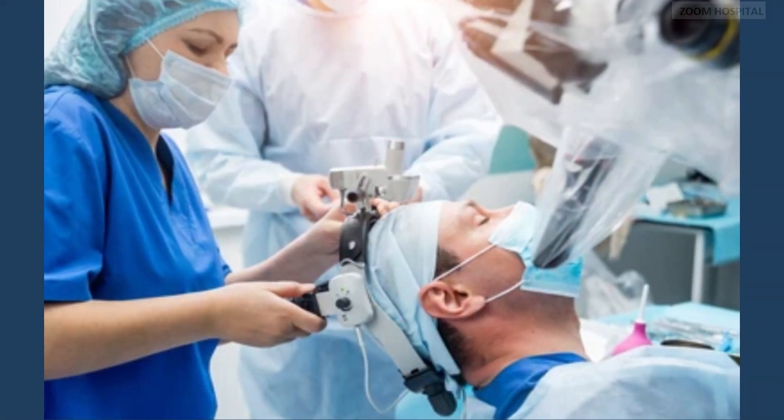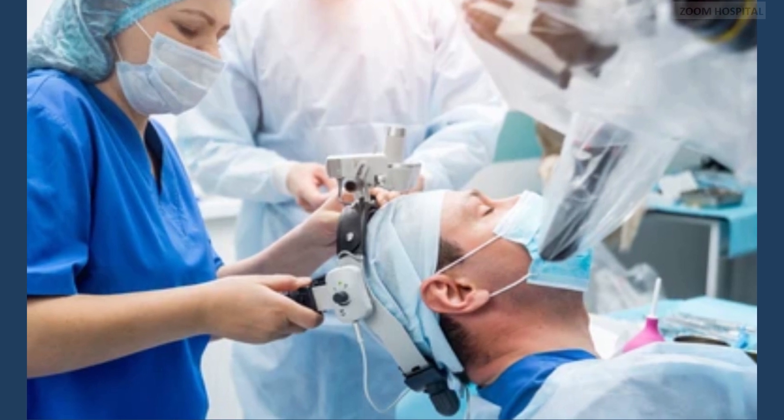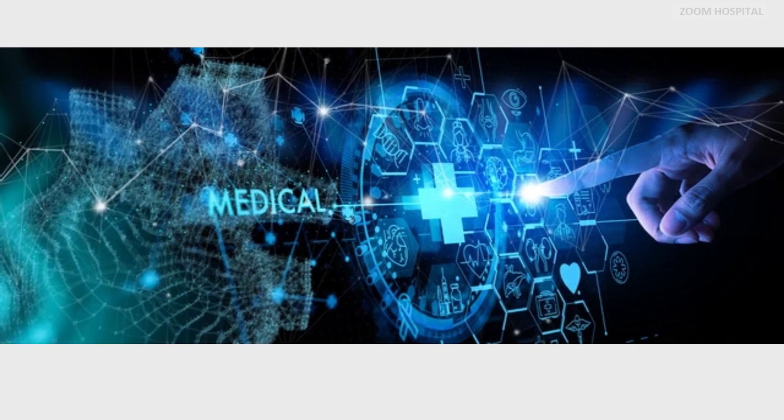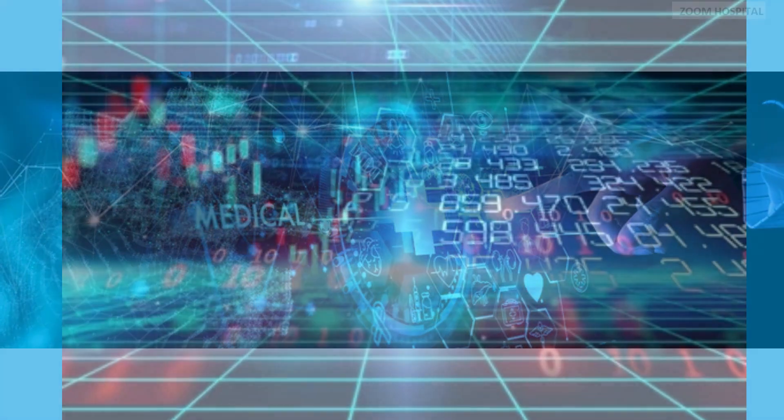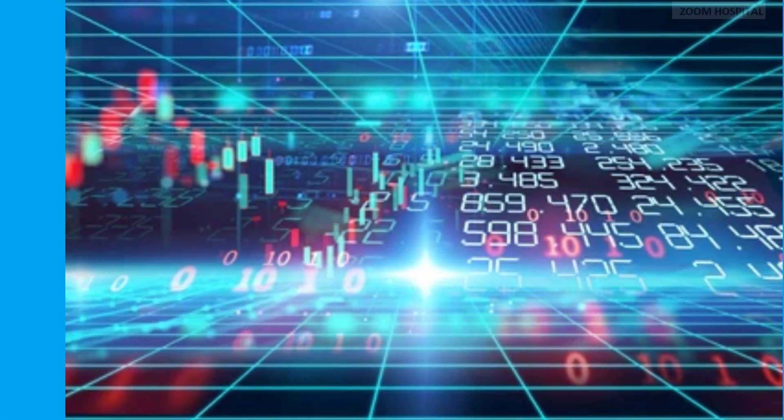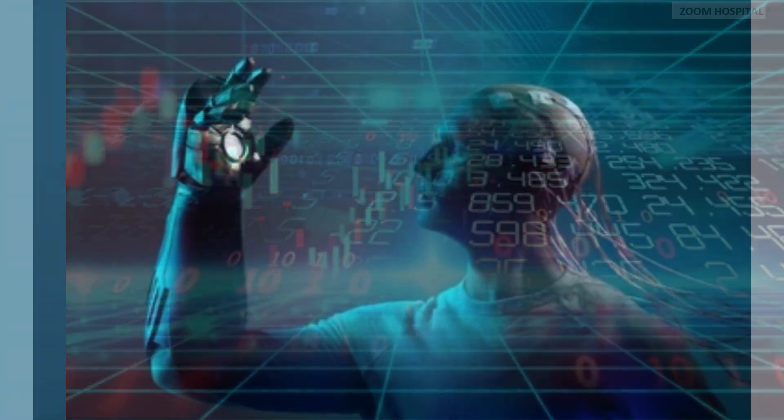Musk, in a recent post on the social media platform X, mentioned that the initial findings indicate promising detection of neuron spikes. These spikes represent neural activity responsible for transmitting information within the brain and to other parts of the body.